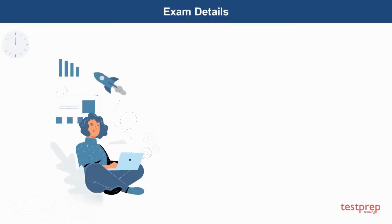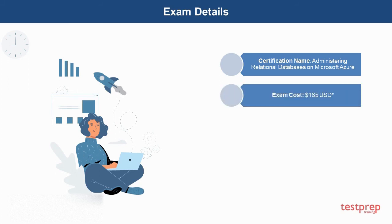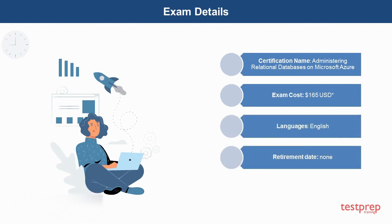Exam details: 1. Certification name is Administering Relational Databases on Microsoft Azure. 2. Exam cost is $165 US dollars. 3. Language is English. 4. Retirement date is none.